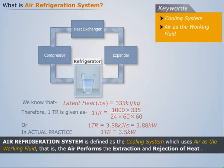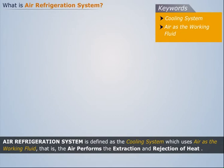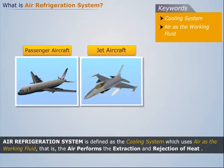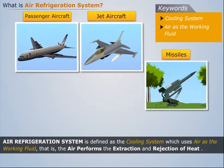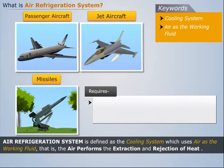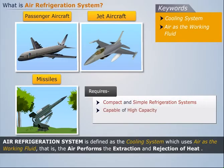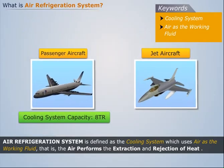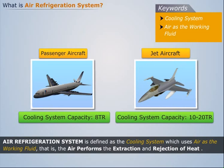Its development was encouraged because of the advent of high-speed passenger aircraft, jet aircraft, and missiles, as they require compact and simple refrigeration systems capable of high capacity with minimum reduction of payload. Usually, an ordinary passenger aircraft requires a cooling system of 8 TR capacity, whereas a jet fighter aircraft requires a cooling system of 10 to 20 TR capacity.